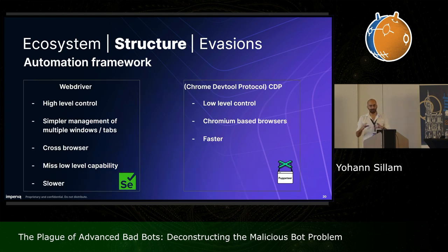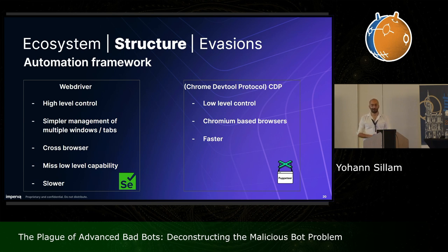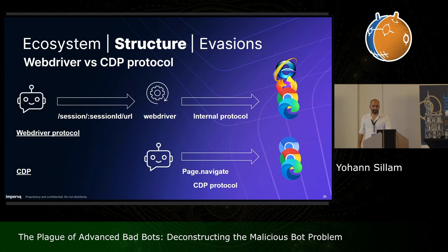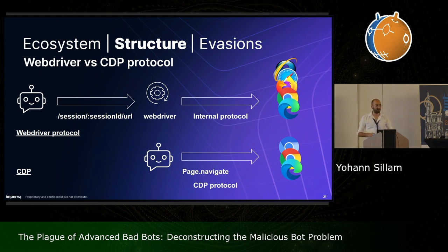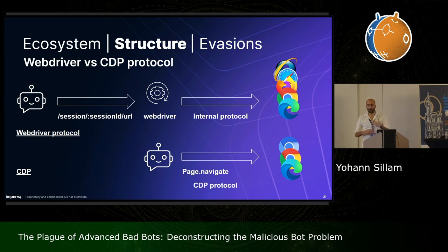Behind the scenes, there are two main protocols being used. The WebDriver protocol is high-level, has simpler management in specific cases, and is cross-browser, but it's a bit slower and misses some low-level capabilities. On the other hand, the Chrome DevTools Protocol (CDP) is low-level but only for Chromium-based browsers. WebDriver is slower because the bot first communicates with a WebDriver instance — for example, a ChromeDriver for Chromium-based browsers or a GeckoDriver for Firefox — and then the WebDriver instance uses the internal protocol to communicate with the browser. With CDP, the bot directly uses Chrome's internal protocol, which is why it's faster.